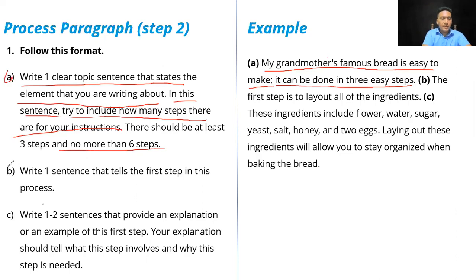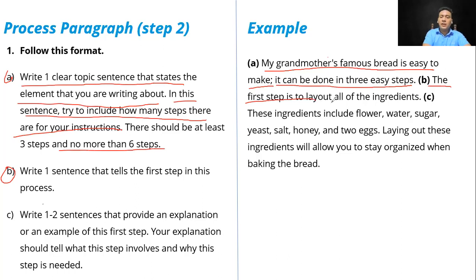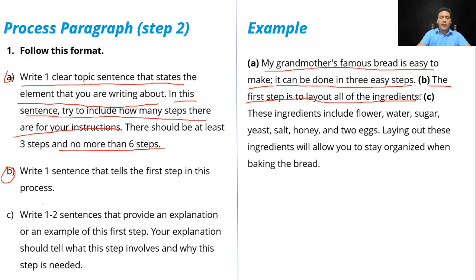Letter B: write one sentence that tells the first step in this process. The first step in the process — we write it down in the first sentence. For example: 'The first step is to lay out all of the ingredients.' So we have all the ingredients here, laying them out. That is the first step, and that is the sentence for letter B.